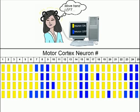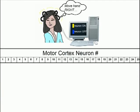Now we know when she thinks left what each neuron does. And then, when she thinks move hand to the right, they go all abuzz.